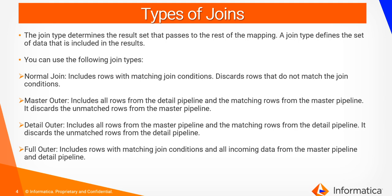The second one is the master outer join, which includes all rows from the detail pipeline and matching rows from the master pipeline, and discards the unmatched rows from the master pipeline. The third one is the detail outer join, which is the opposite of the master outer join — it includes all rows from the master pipeline and matching rows from the detail pipeline, discarding unmatched rows from the detail pipeline. The fourth one is the full outer join, which includes rows with the matching join condition and all incoming data from both the master pipeline and detail pipeline.